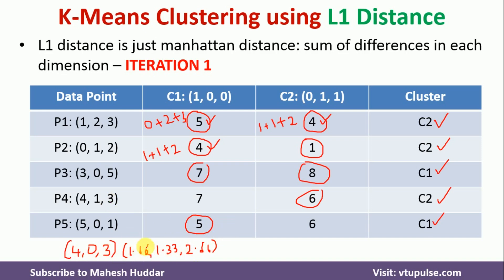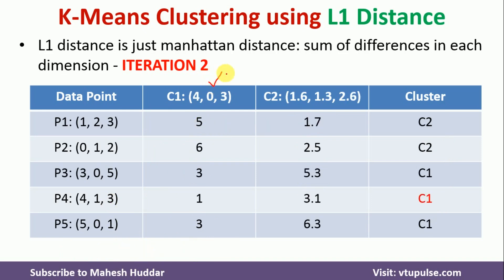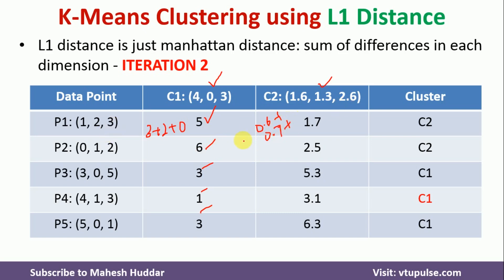With these new centroids, we recalculate distances. For example, the distance from C1 to P1: 4 minus 1 is 3, 0 minus 2 is minus 2 with absolute value 2, and 3 minus 3 is 0, giving a total of 5. For the distance from C2 to P1: 1.66 minus 1 is 0.6, 1.33 minus 2 is minus 0.7 with absolute value 0.7, and 2.66 minus 3 is minus 0.4 with absolute value 0.4. Adding these gives 1.7.